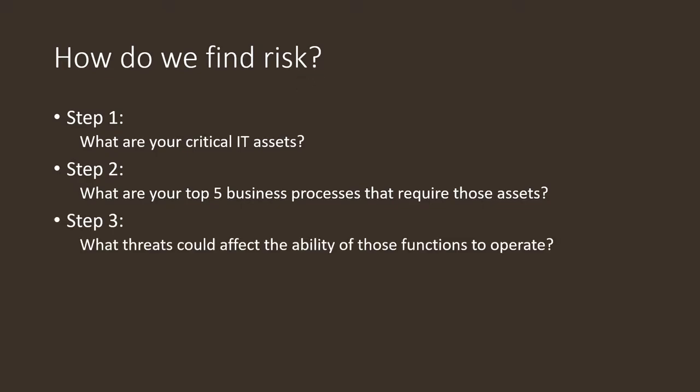You also need to identify business processes involved in building your ability to interact with your customers. Step three is to identify what threats could affect the ability of those functions to operate. For example, if you define your web server as a critical asset and it runs WordPress with five different add-ons — two of which have vulnerabilities — you're not just dealing with a WordPress vulnerability, but with the vulnerabilities of all those add-ons as well.